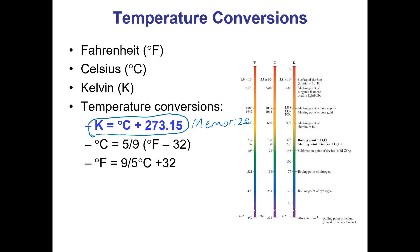For Celsius and Fahrenheit we don't do conversions quite as frequently, so you would be given those formulas. Degrees Celsius equals five-ninths times the quantity (Fahrenheit temperature minus 32). Because Fahrenheit minus 32 is in parentheses, you have to do that first and then multiply by five-ninths. If we have degrees Celsius and want Fahrenheit, we take nine-fifths of the degrees Celsius plus 32 — no parentheses, so we do nine-fifths of Celsius first and then add 32.